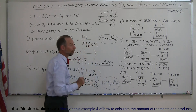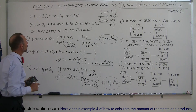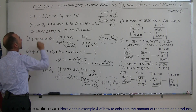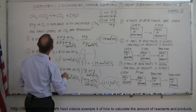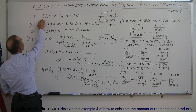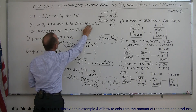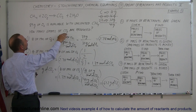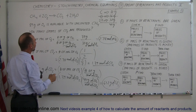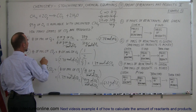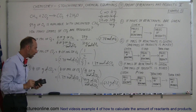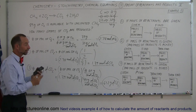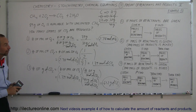And that's how we go through that process — a three-step process. We were given the number of grams of oxygen, the limiting reactant. We convert the grams of the reactant to moles of the reactant, then convert moles of the reactant to moles of the product, then convert moles of the product to grams of the product. That's how you do a problem like that.